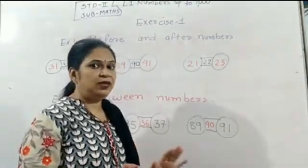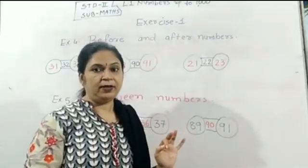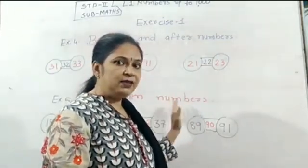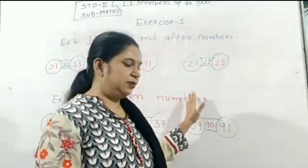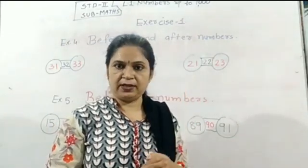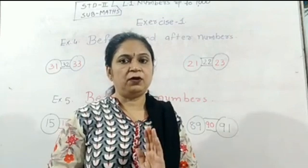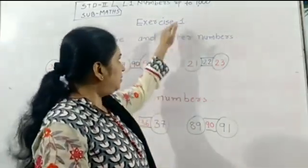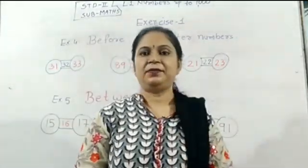So children, today we have finished exercises 1 through 5. What you have to do is complete all five exercises — first in the textbook, then write them neatly in your notebook, leaving a line between each, with proper boxes. So for today we are ending this session for lesson number 1, exercises 1 to 5. Bye, see you, and good day.